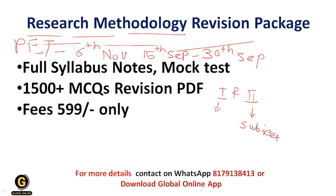For example, if you are appearing for Biotechnology, then paper 2 will be on Biotechnology. The total marks for this examination is 100 marks. Paper 1 carries 50 marks and paper 2 carries 50 marks. Each question carries 1 mark and there is no negative marking.